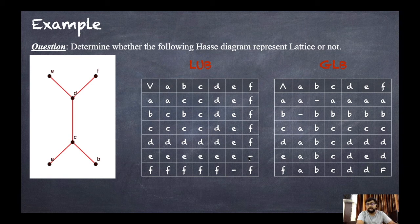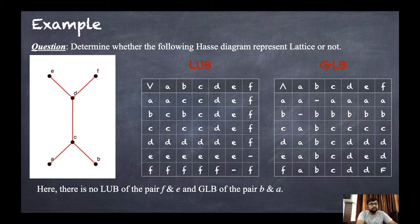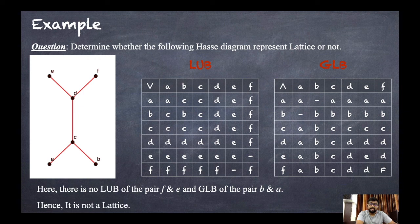In the LUB table we have one pair that does not have a LUB — the pair (e, f) — and in the GLB table we also have one pair that does not have a GLB — the pair (a, b). Since they do not both have a LUB and GLB, we can say that this Hasse diagram is NOT a lattice.